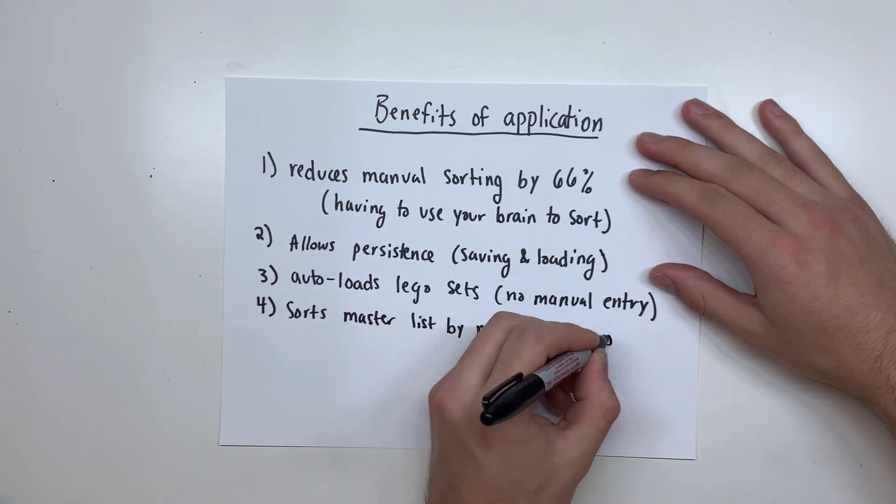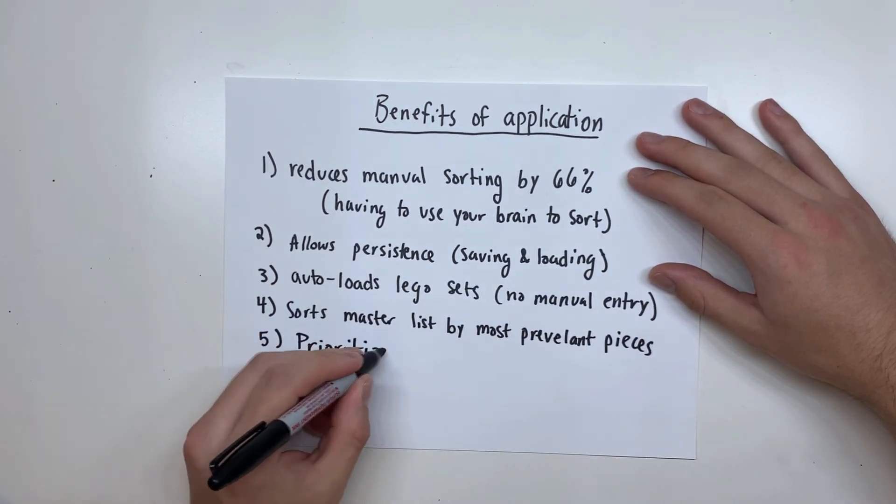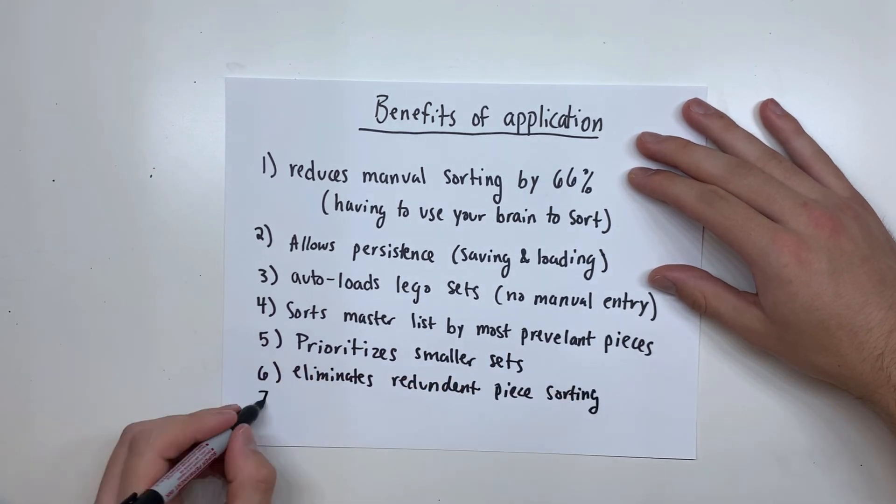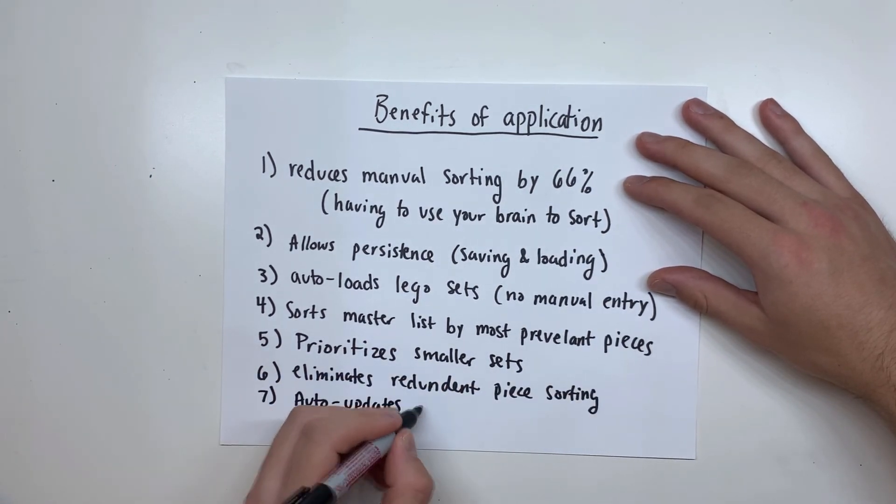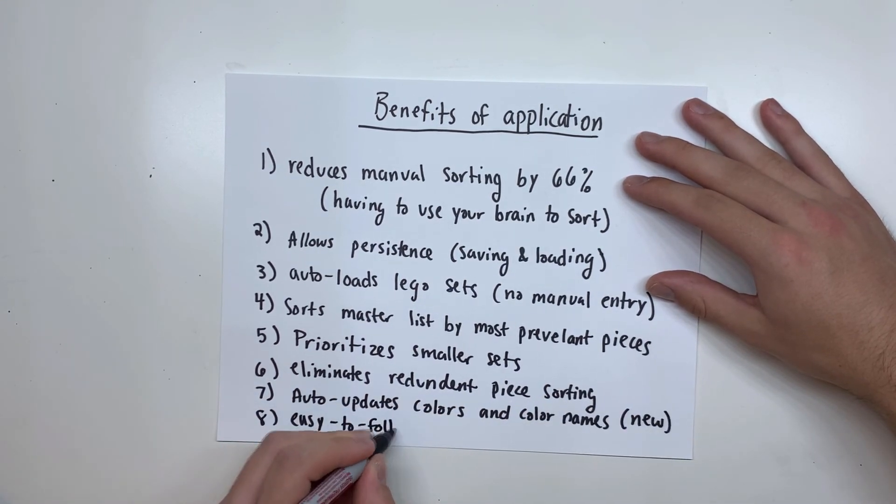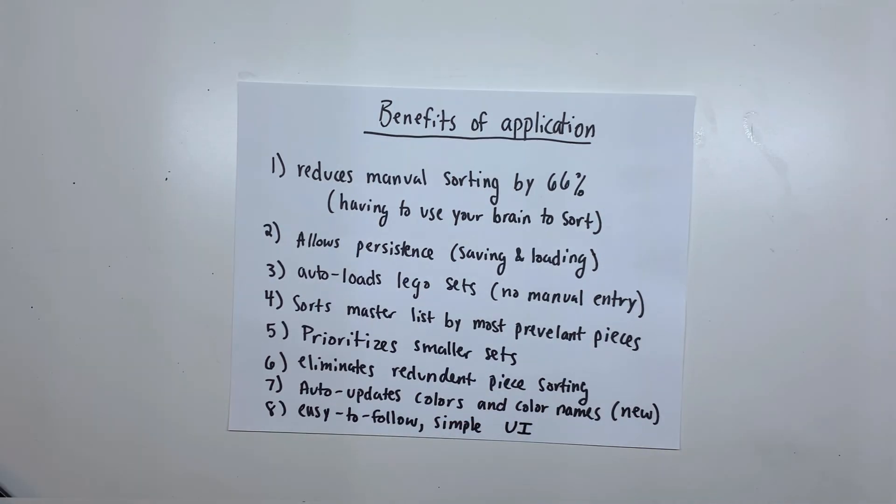Sorts the master list by the most prevalent pieces. Gives priority to smaller sets. Eliminates redundant piece sorting. Automatically updates color names. It's easy to follow and has a simple user interface.